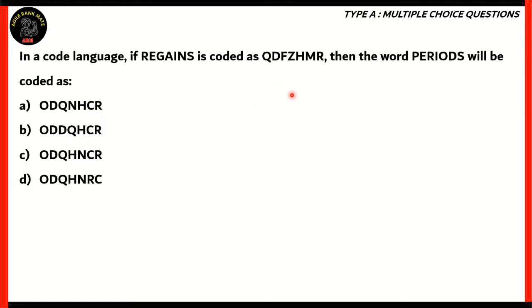In a code language, if REGAINS is coded as QDFZHMR, then the word PERIODS will be coded as one of the four options. How do we solve this question? When it comes to languages, we need to translate the words into the code, which in most cases would have to do with each letter.